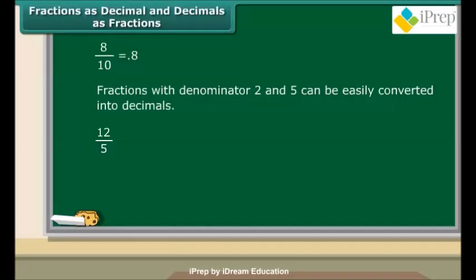To know the number of tenths, multiply and divide the given fraction by 2. This gives the new fraction 24 upon 10. So we have 2 ones and 4 tenths, or 2 ones and 0.4, which makes it 2.4.